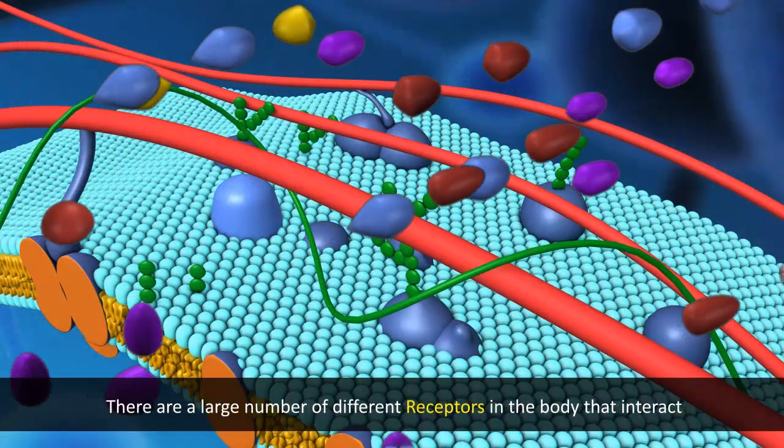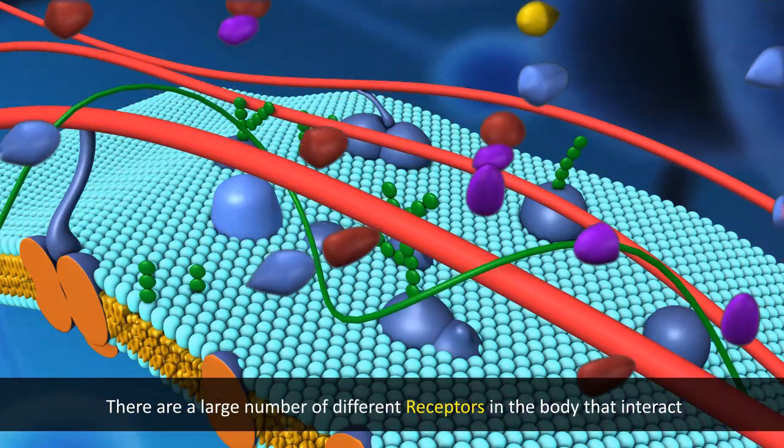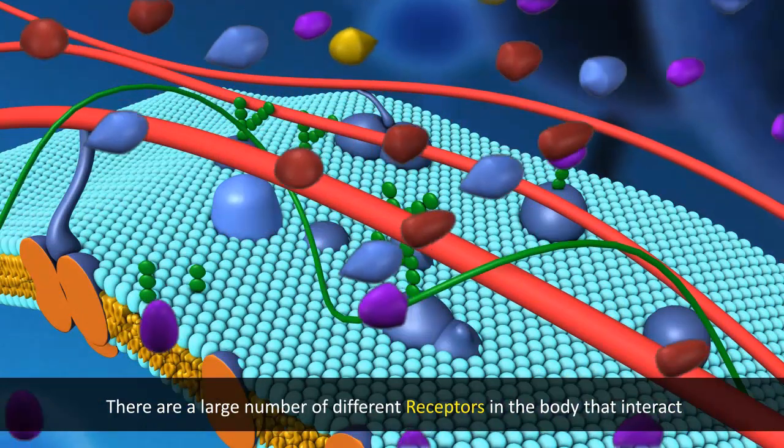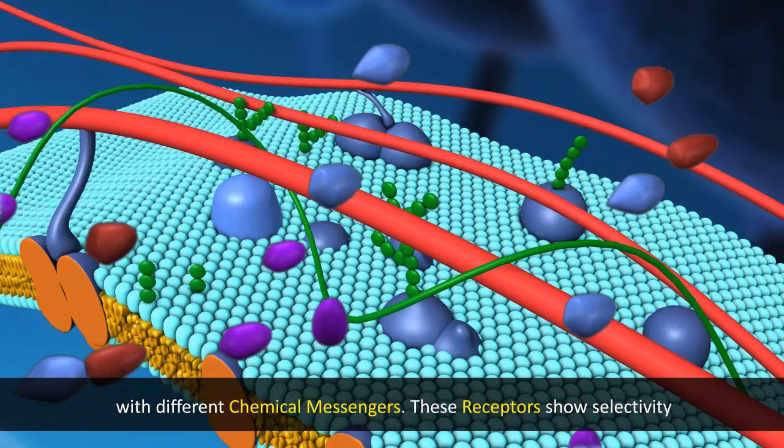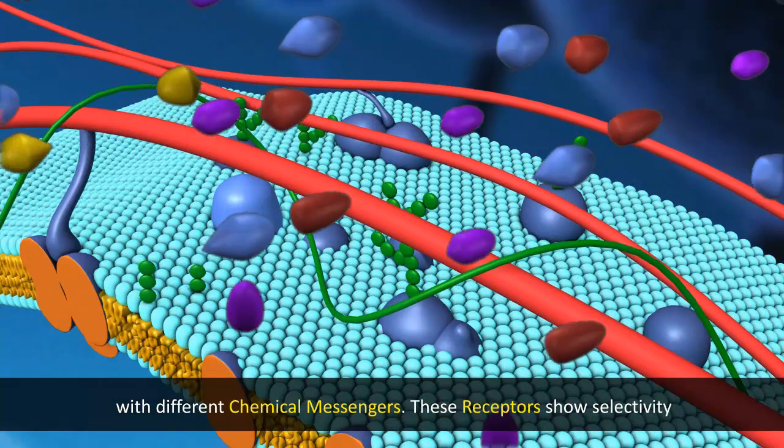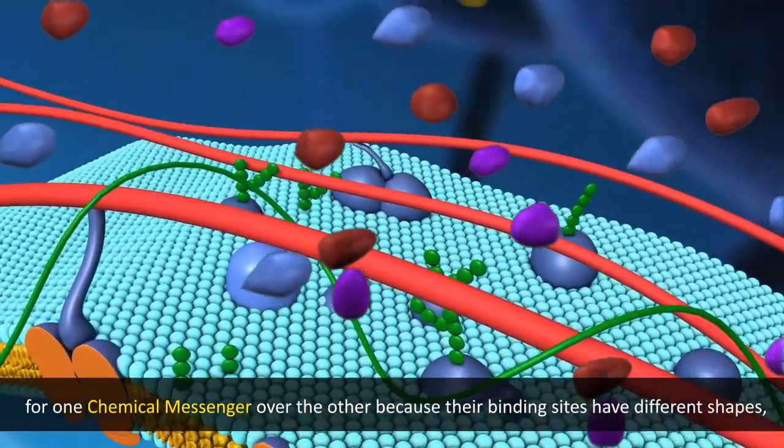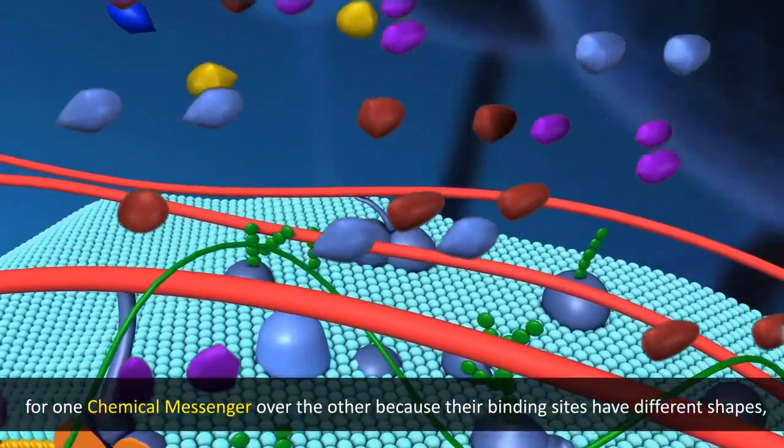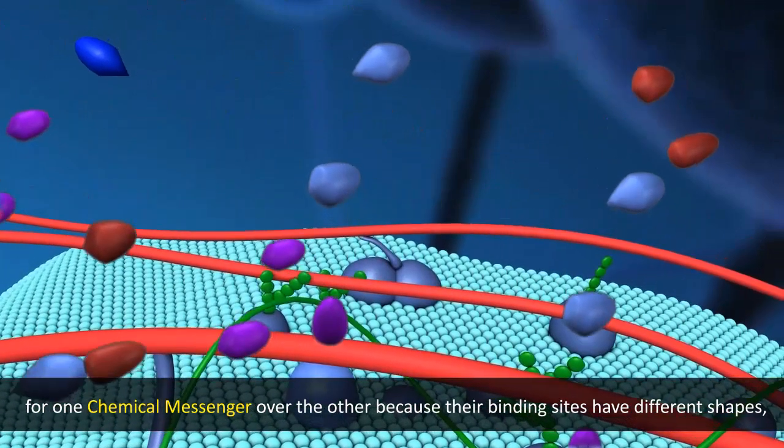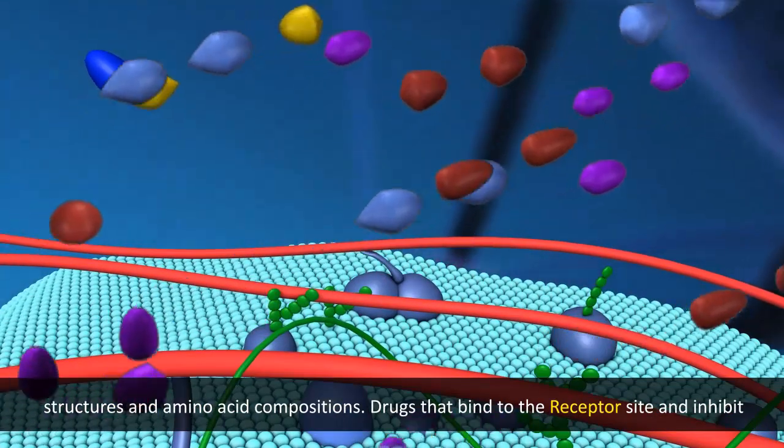There are a large number of different receptors in the body that interact with different chemical messengers. These receptors show selectivity for one chemical messenger over another because the binding sites have different shapes, structures, and amino acid compositions.